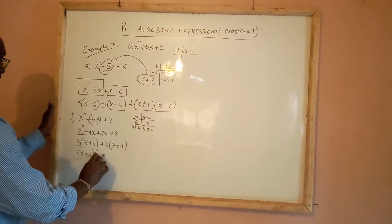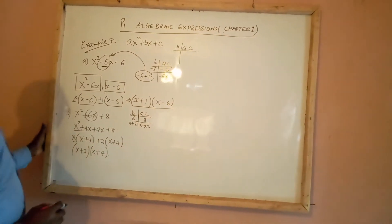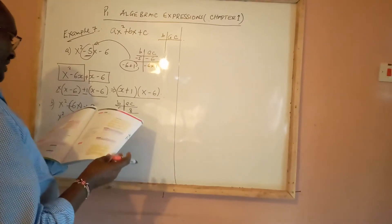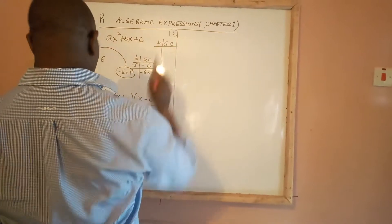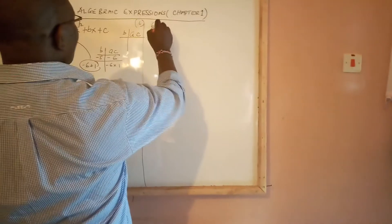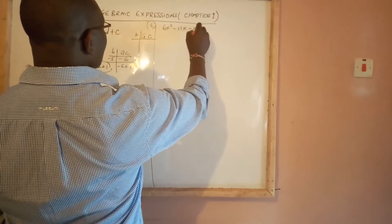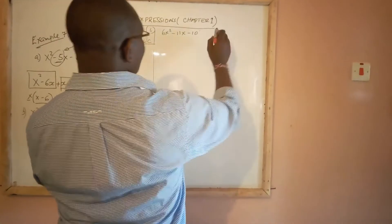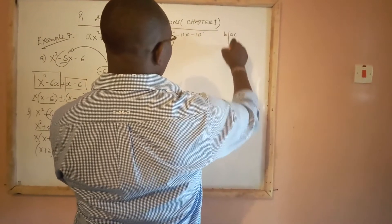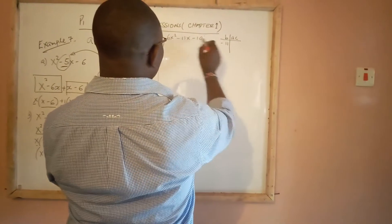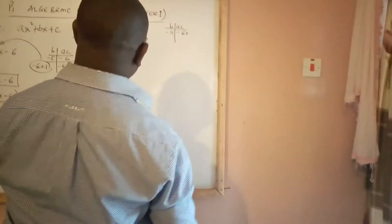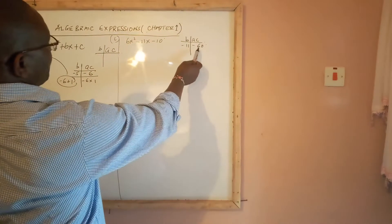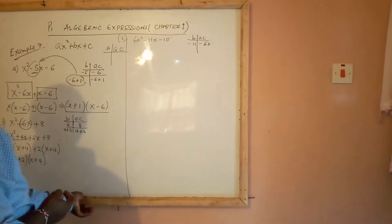The outer terms form their own bracket: (x plus 2)(x plus 4), and that is completely factorized. Now for part c we have 6x squared minus 11x minus 10. This looks more complicated because a is 6. Our b is minus 11 and our ac is minus 60. One number must be negative and the other positive so their product is negative.